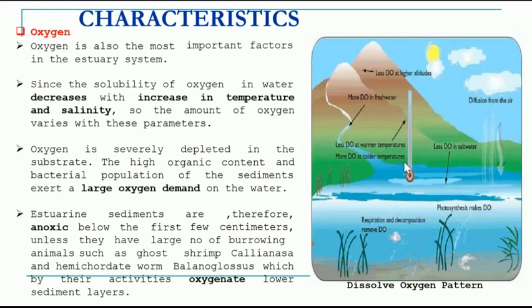Due to the salinity of estuarine water, it heats up very quickly, resulting in less dissolved oxygen. This leads to a condition called anoxic condition, meaning the water oxygen level is decreased and the oxygen demand increases. Oxygen is severely depleted under estuarine conditions, and the sediment at the bottom has a low concentration of oxygen. Only organisms that can survive under low oxygen conditions — like shrimps and other crustaceans like crabs — can survive under such conditions.